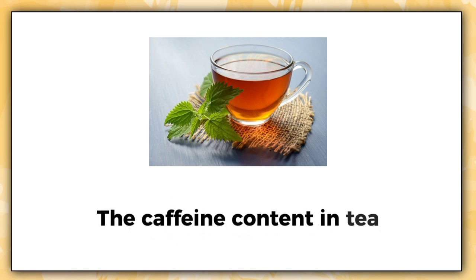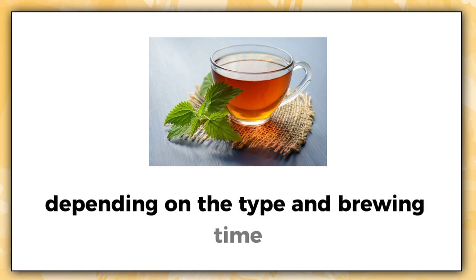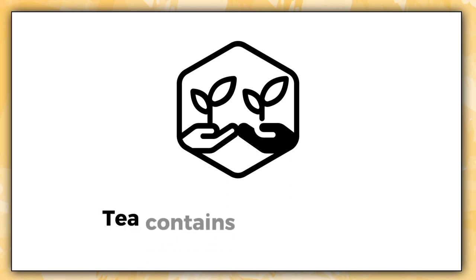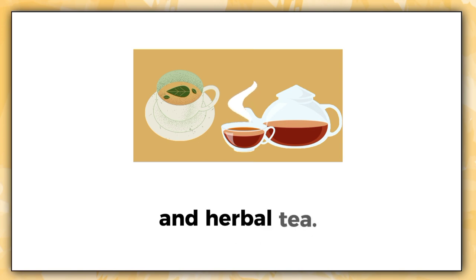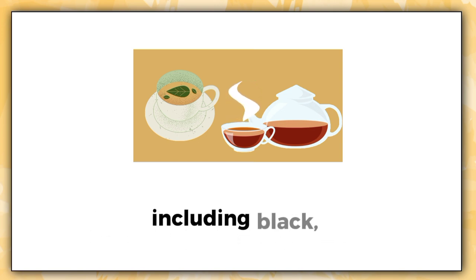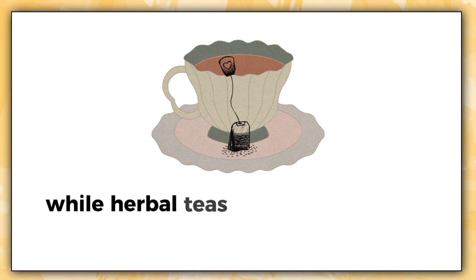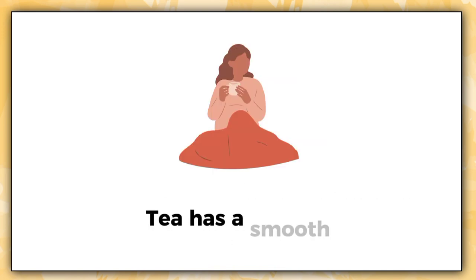Tea contains antioxidants called polyphenols that may offer health benefits. There are many varieties of tea including black, green, white, and herbal tea. Black tea tends to have the highest caffeine content while herbal teas contain almost no caffeine. Tea has a smooth, delicate flavor.